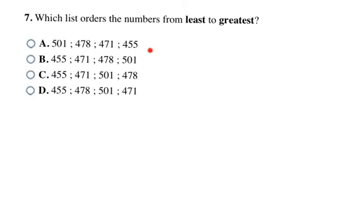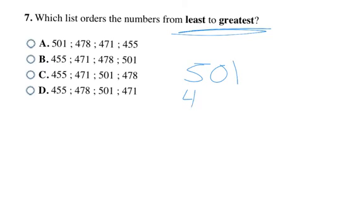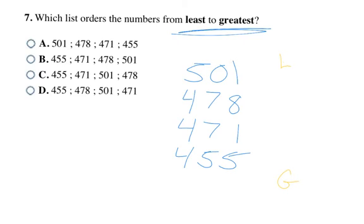Now they're giving us four numbers to list from least to greatest. The trickiest part is paying attention to the directions — check whether it's biggest first down to smallest, or smallest up to biggest, as in this problem. They often put both orders in the answer choices to trick you, so read carefully and even underline the direction. I'll take the numbers from choice A, list them vertically, and write an L down to a G to remind myself I'm going least to greatest — that way I can fill them in order even if I find the bigger number first.